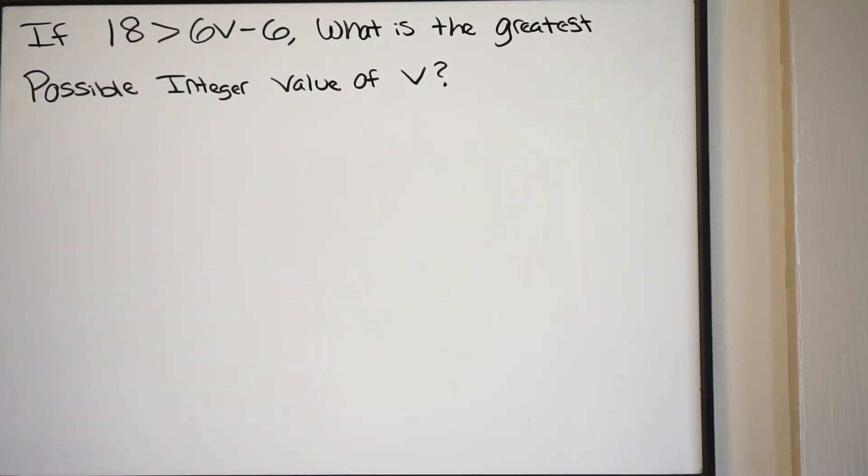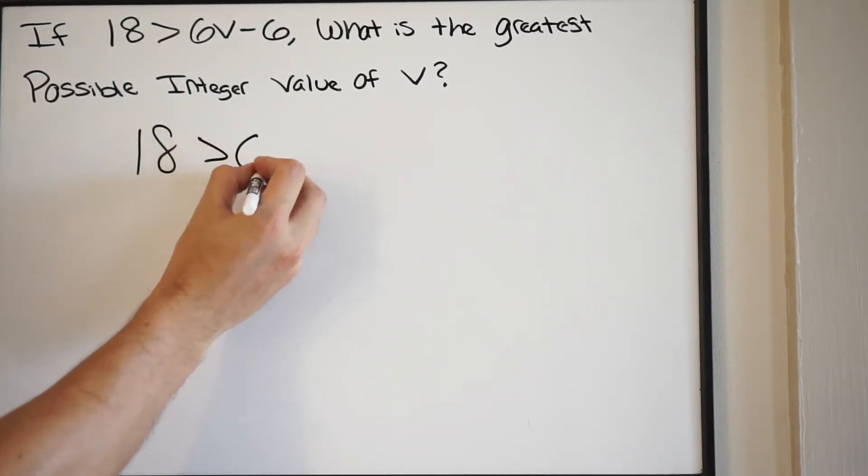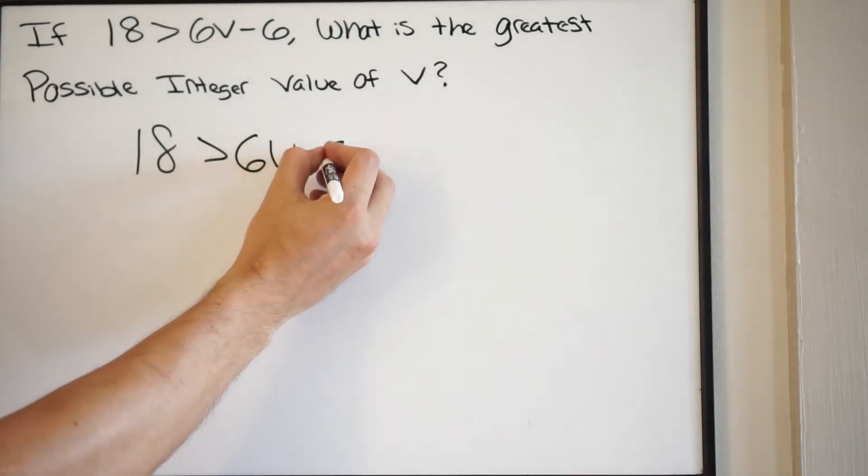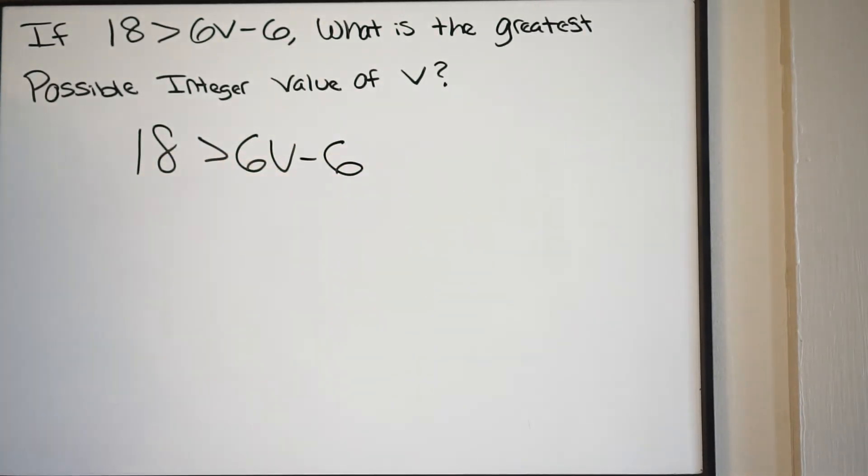So our first step is to solve this inequality. Let's go ahead and rewrite what we have. So we have 18 greater than 6v minus 6. And again, we solve inequalities just like we do equations.